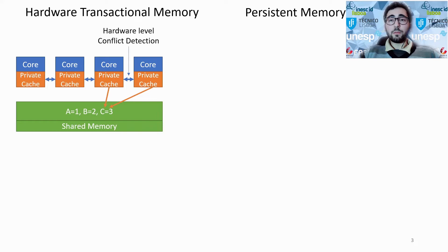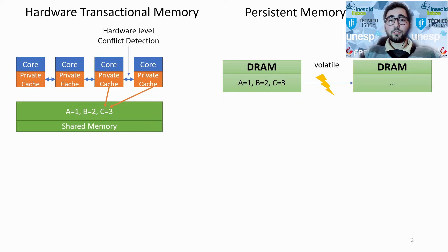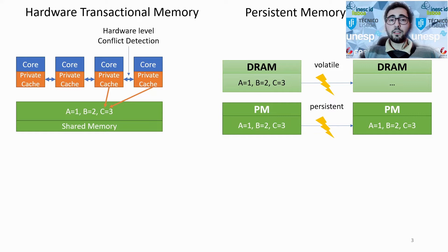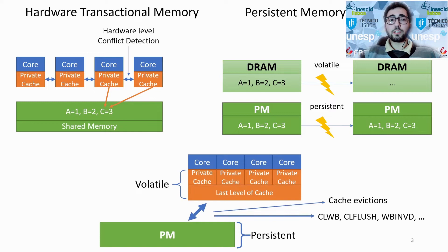Byte-addressable persistent memories, PMs for short, is a novel technology that promises both faster durability than block-addressable disks and higher capacity than DRAMs. Solutions for systems equipped with HTM and PM still have to overcome the issues related with volatile memories that stand in between the CPU and PM, namely the CPU caches.